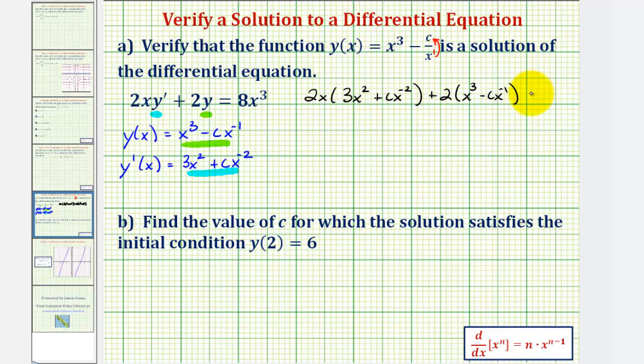We want to verify this is equal to 8x³. So now we'll distribute, combine like terms, and see if this left side does equal 8x³. So we have 6x³. Now for this next product, again this is x to the first, so we'll add the exponents on x.